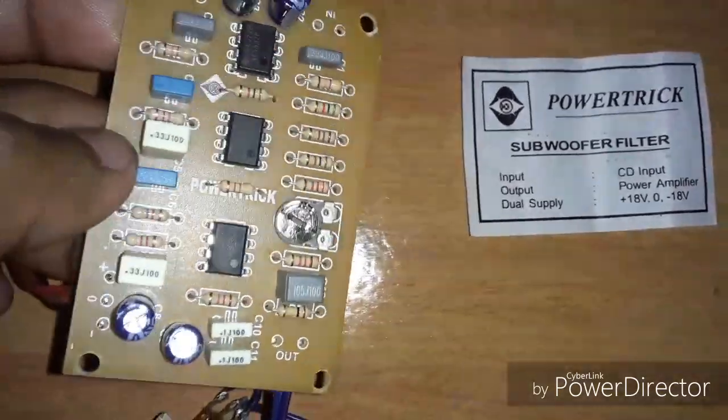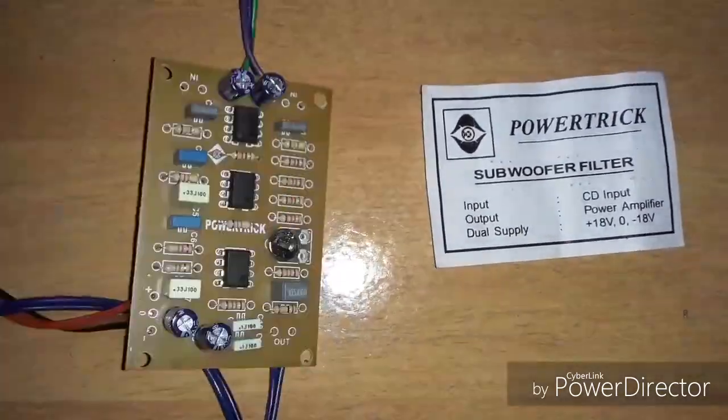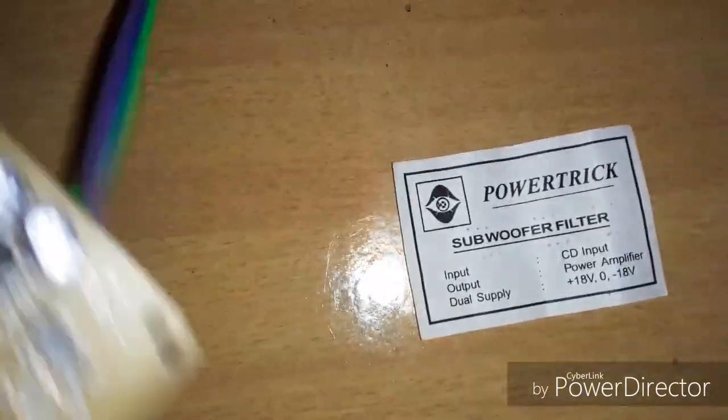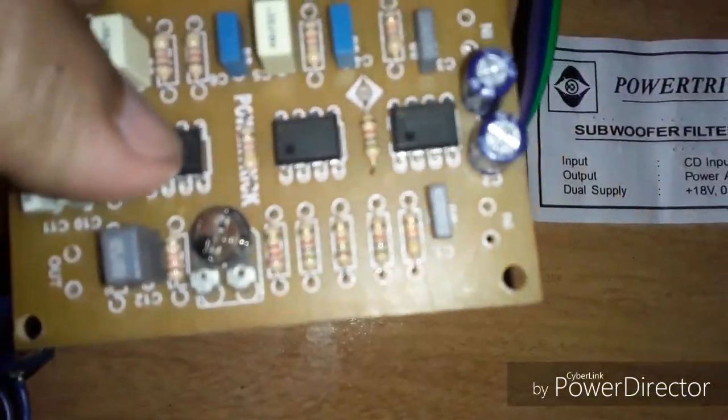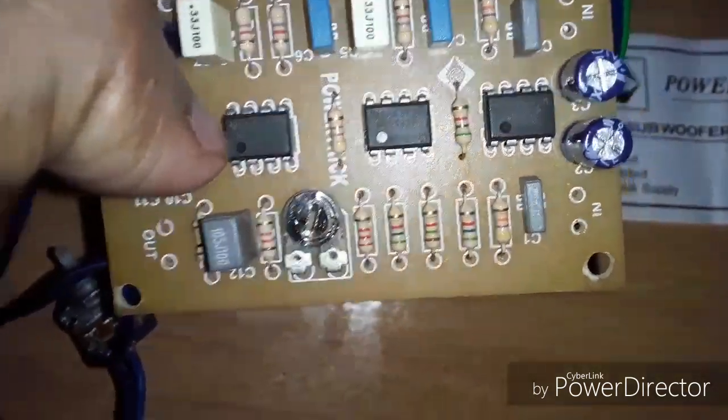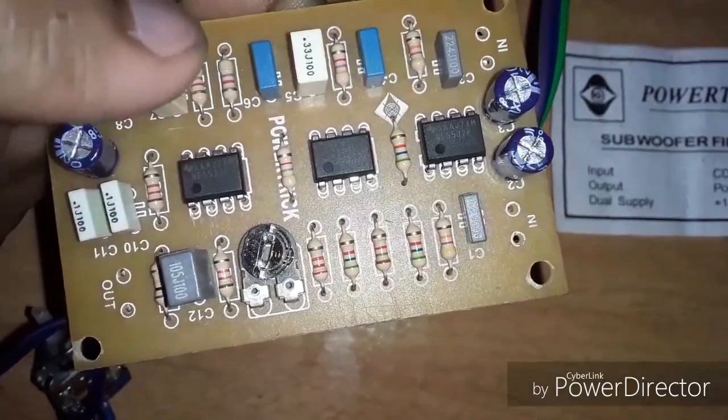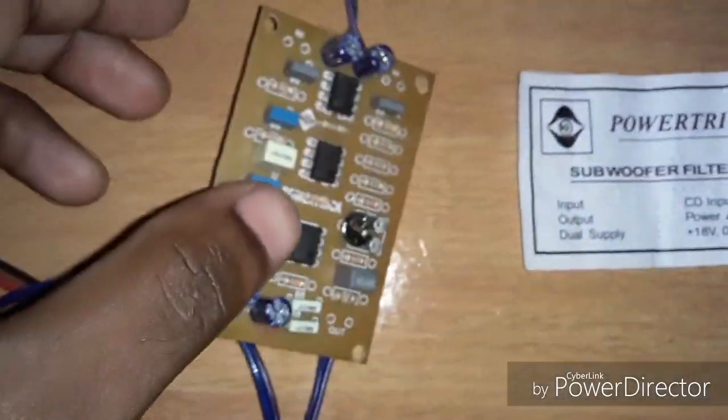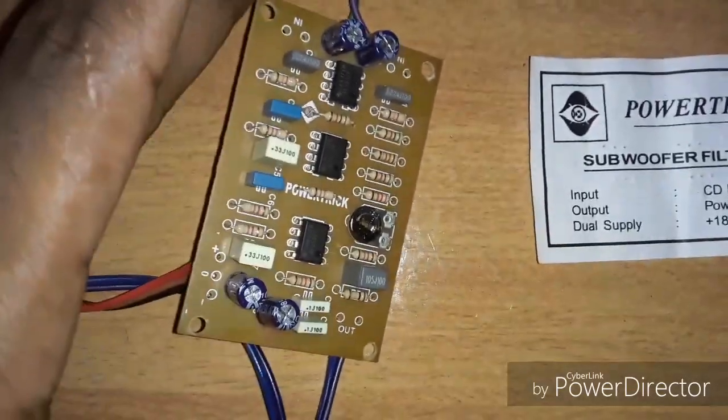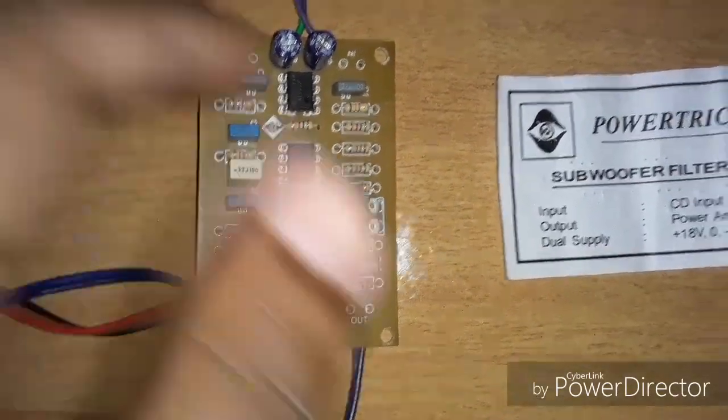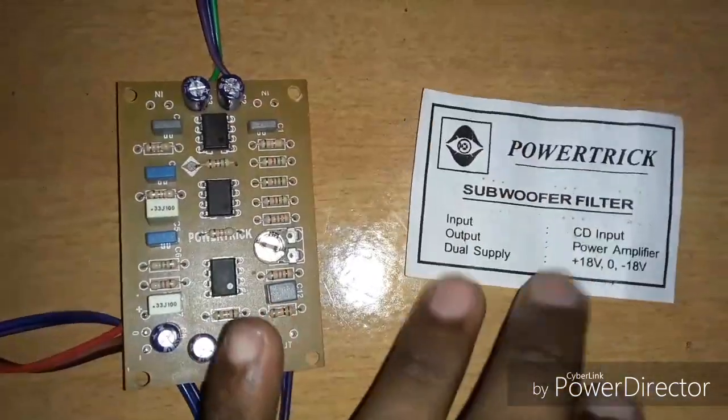This is a low-pass filter board. Now, the board is using the Powertrick. This is the N5532 dual op-amp IC. This is the main IC. This is the great output. This is the filter we can see here. We can add the specifications here.